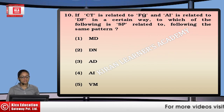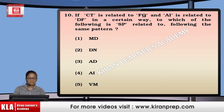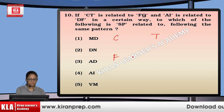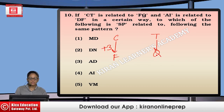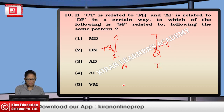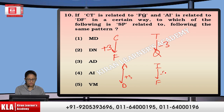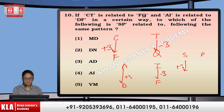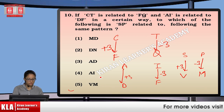Next: if CT is related to FQ and AI is related to DF in a certain way, to which is SP related following the same pattern? C to F is plus 3, T to Q is minus 3. Similarly, A to D is plus 3, I to F is minus 3. Applying the same pattern to SP: S plus 3 gives V, P minus 3 gives M. So the answer is VM — option number 5.